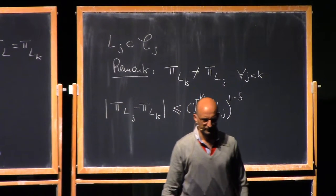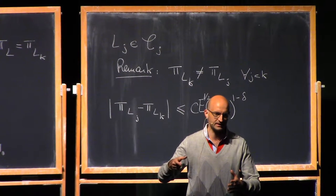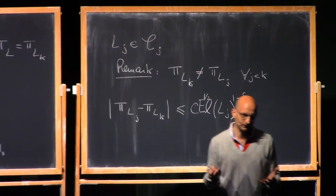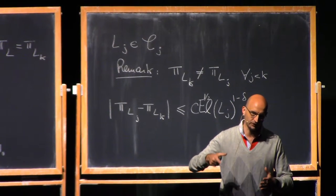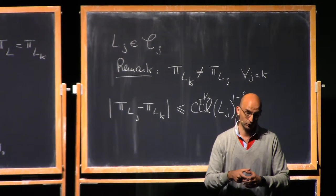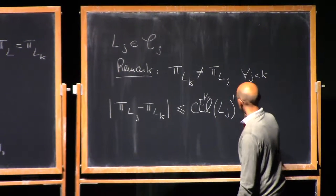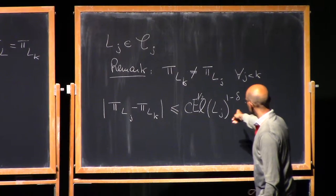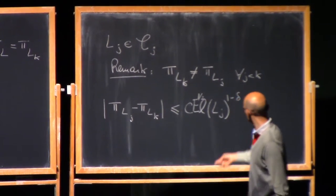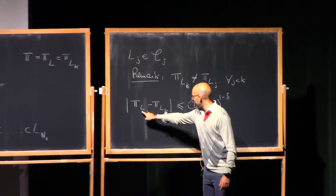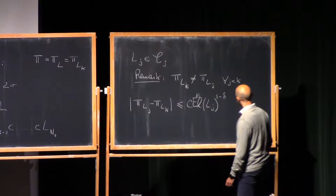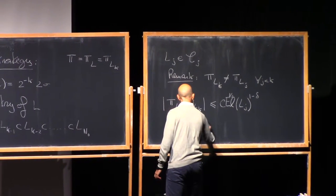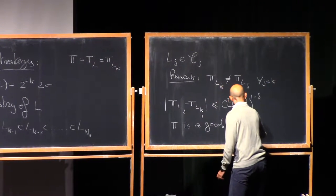Why do we know that planes are different? The planes are the planes optimizing the excess at that ball — you must be unusually lucky to have the same plane. The plane is the average of the derivative of u at that scale; at a smaller scale the average will be something else. One way to prove this estimate is to compare the plane of one cube with the plane of its father, knowing the excess is small. Another way is that since you are C1 to the power 1 minus delta, this is the tilt you can expect between scales LJ and LK. So pi LK is a good plane even at larger scales.